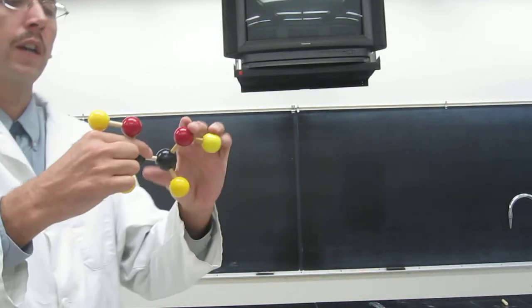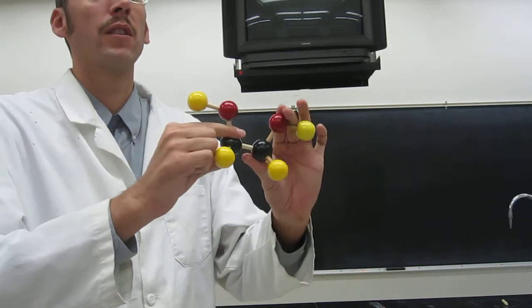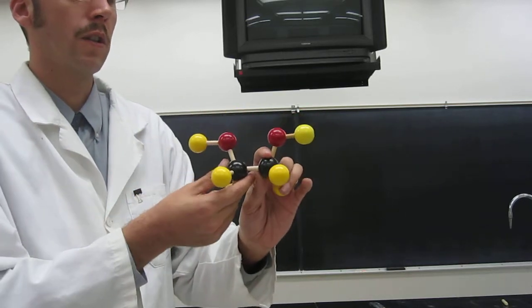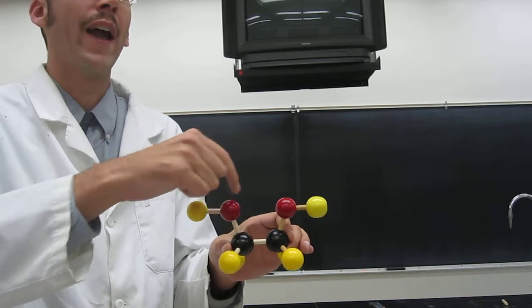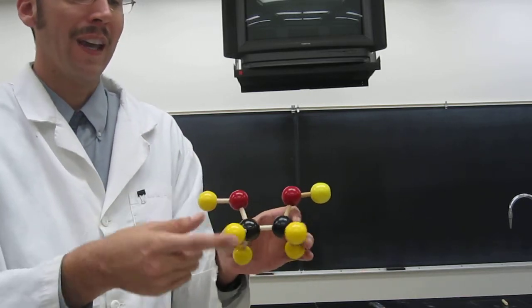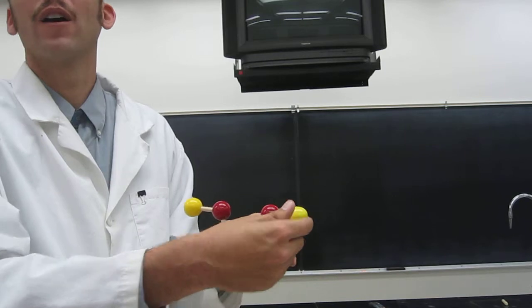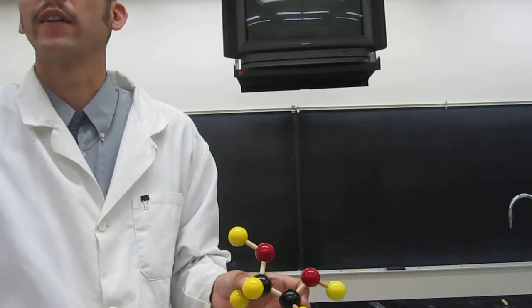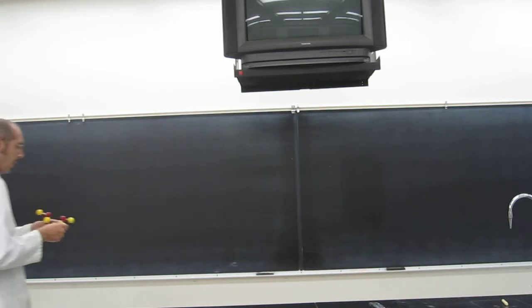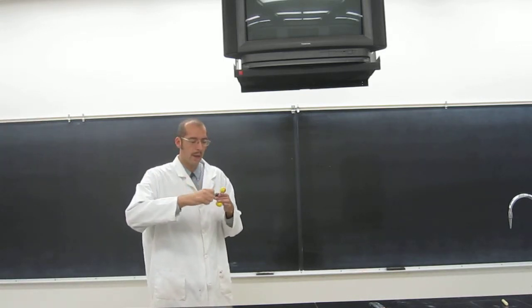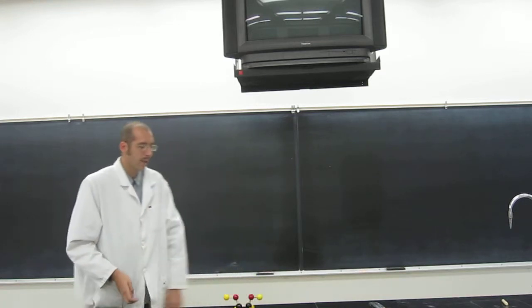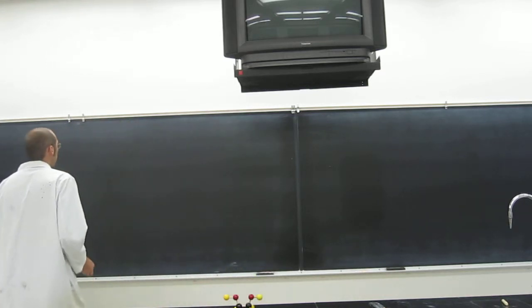So let's look at the ball and stick version of it and let's try to draw its Lewis structure. When we're drawing Lewis structures or looking at ball and stick models, usually carbon atoms are black, the red atoms are oxygen, and in this case the yellow atoms are hydrogen. Usually they're white. You can tell it's hydrogen because it only makes the one bond.